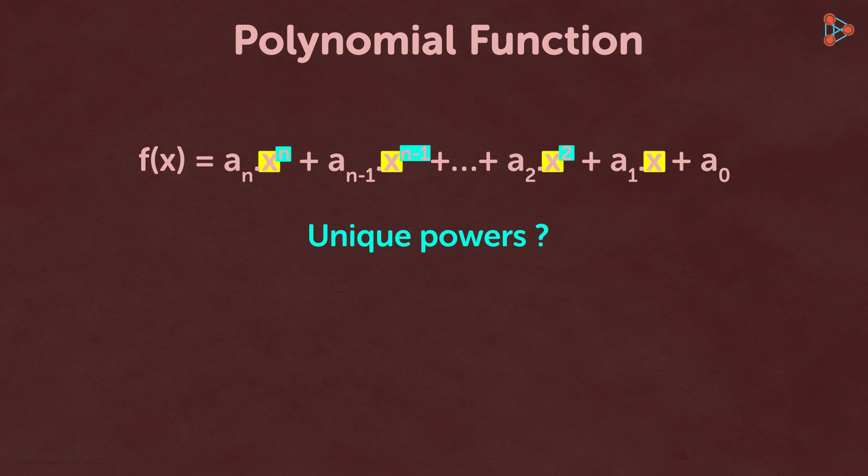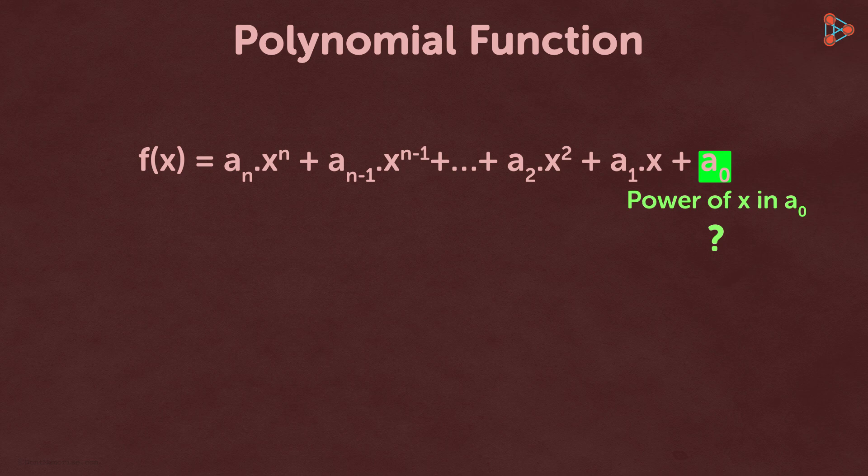But what is the power of x in the term a_0? To answer this question, we need to understand that a_0 is nothing but a_0 multiplied by x raised to 0. So the power of the x term is 0.